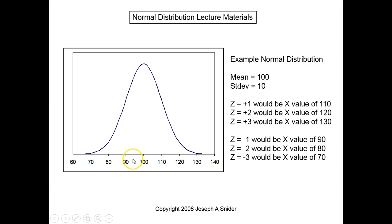And then on the plus side, 110, 120, 130, 140. So you can see over here on the right, Z is equal to plus 1, the X value is 110. Z equals plus 2, that's two standard deviations, two 10s would be 120.